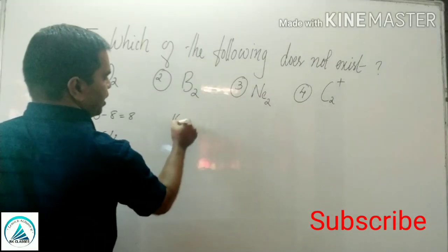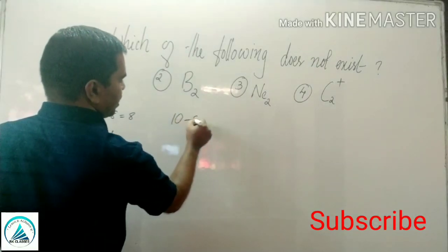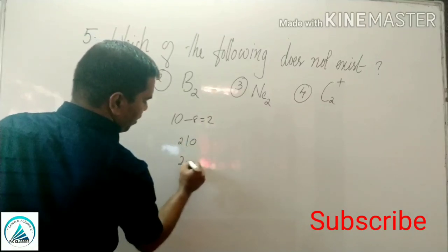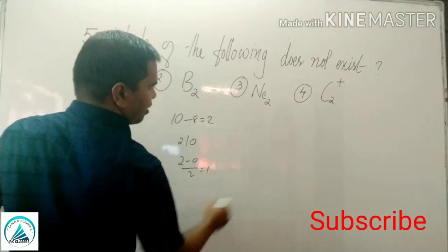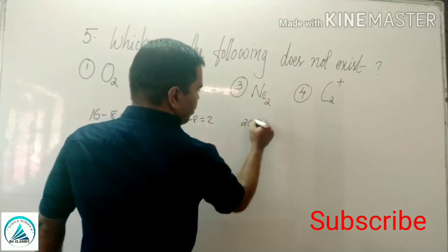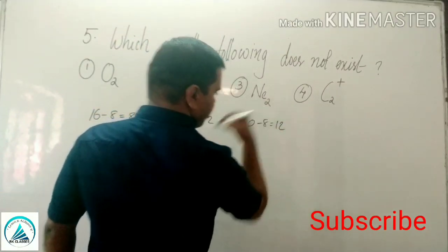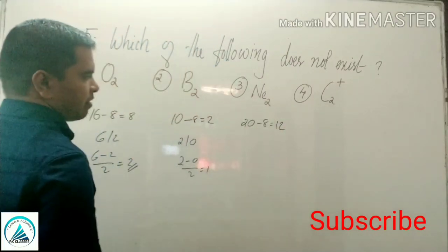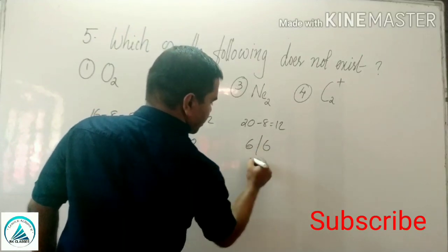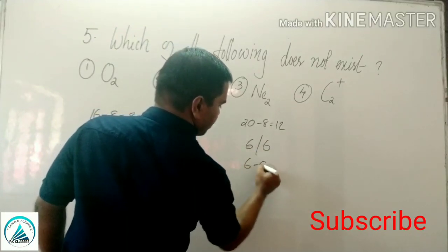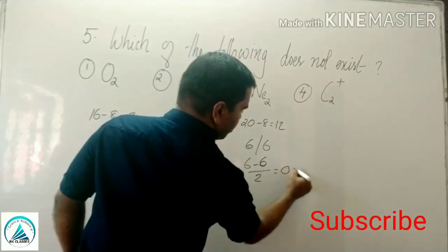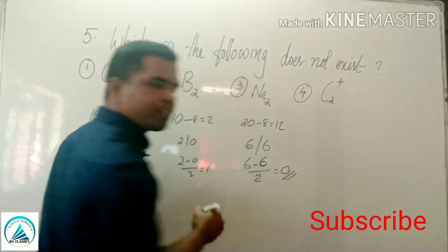V2: 10 electrons. 10 minus 8 = 2 remaining. Bond order = (2 minus 0) divided by 2 = 1. N2 (with 20 electrons): 20 minus 8 = 12 remaining. Bond order = (6 minus 6) divided by 2 = 0.